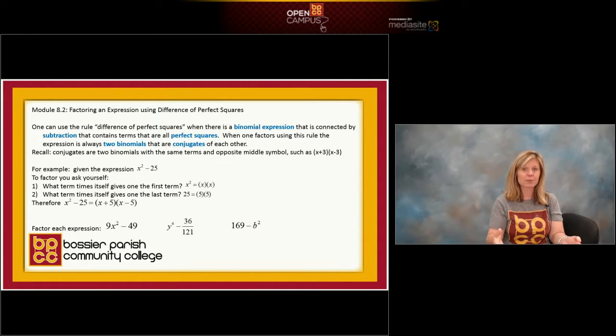You've just factored an expression using difference of perfect squares. Now, remember, you can check yourself by doing FOIL, right? When to multiply two binomials, you do first, outer, inner, last. So let's do a verbal check.